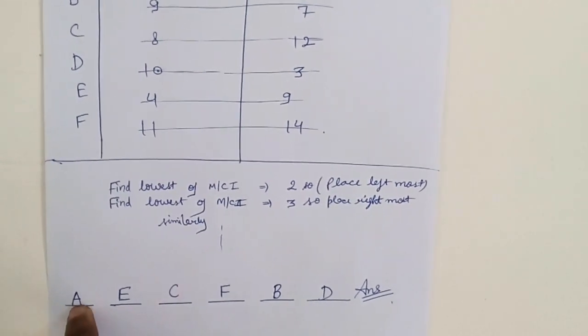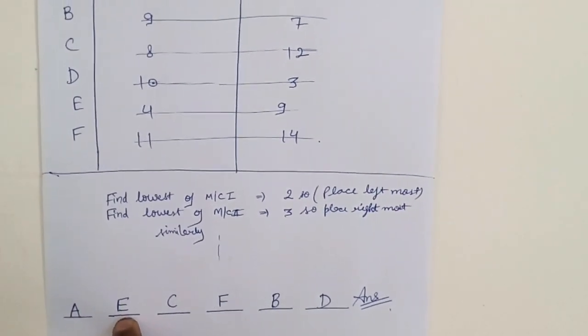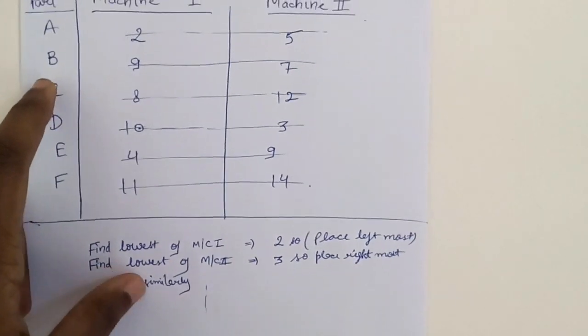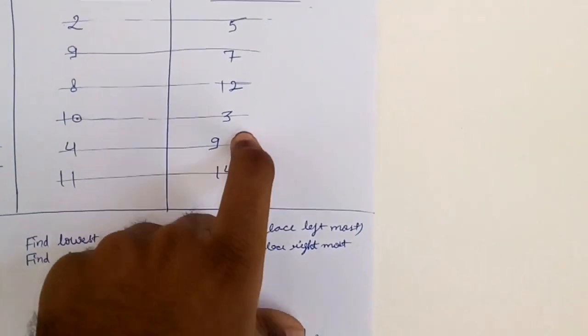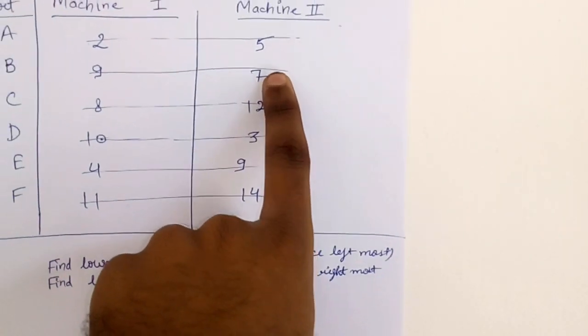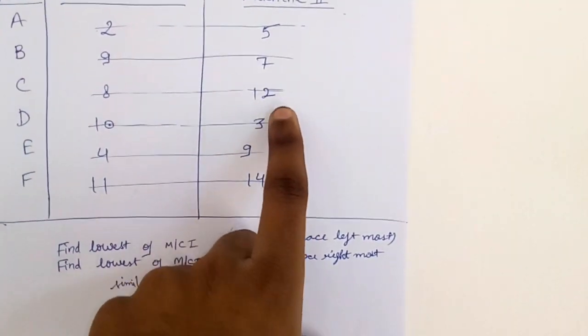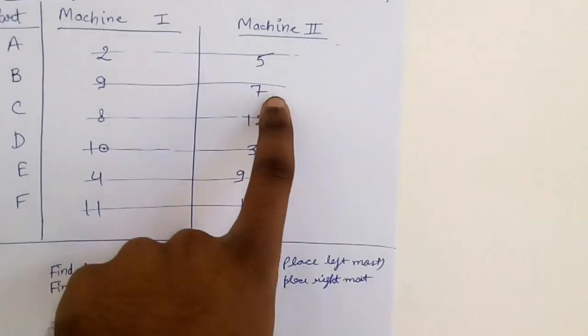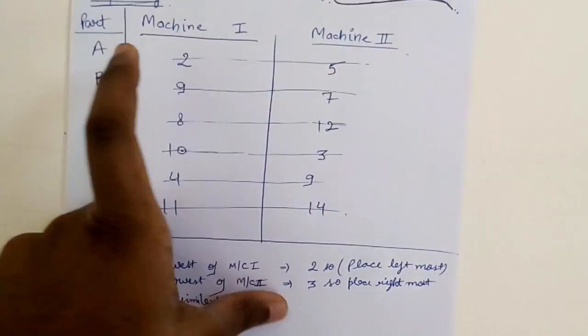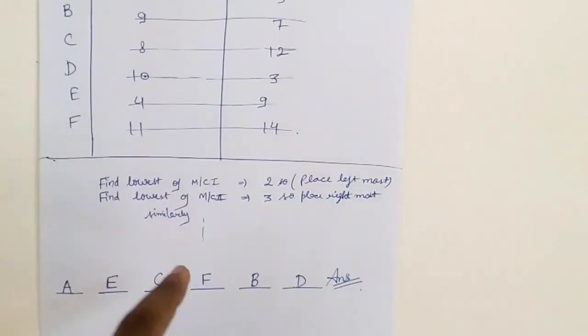Now on machine two you get seven, twelve, and fourteen. Minimum is seven, so strike off this row. You get part B, so write B on the rightmost available position. Again go on machine one.